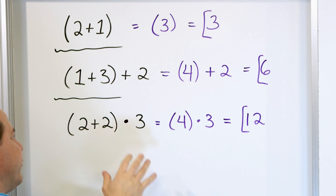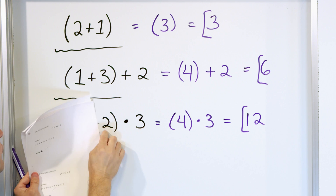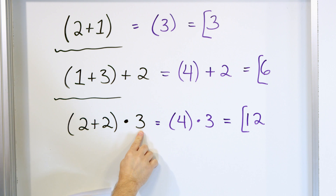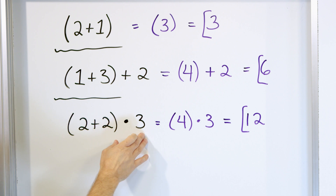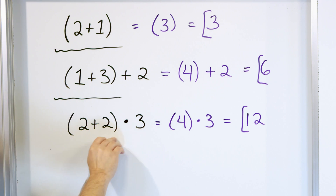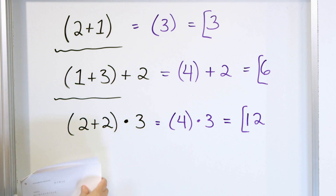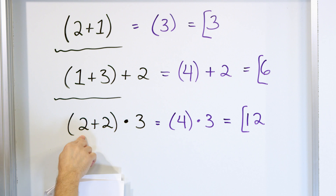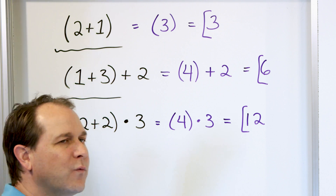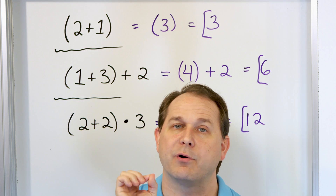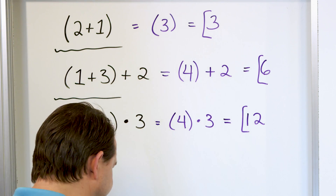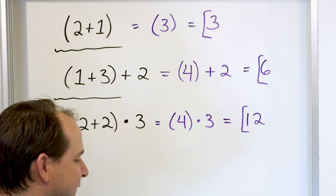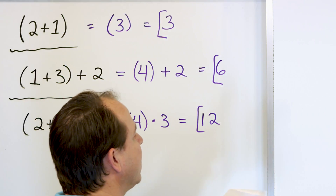If you don't know the rule, you might do two times three equals six, then six plus two equals eight — that's the wrong answer. The correct answer is 12. If you put this into a calculator, you'll get 12. Doing it in the wrong order gives you eight, which is wrong. That is why parentheses force us to do what is inside them first — that's the only thing they're for.